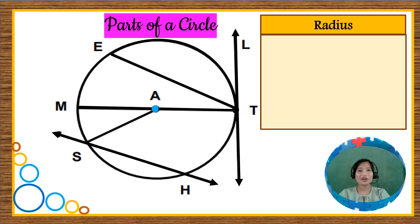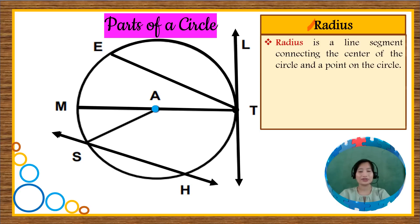The next part of a circle that we are going to learn is radius. Radius is a line segment connecting the center of the circle and a point on the circle. It is named using the letter of the center and a point on the circle.